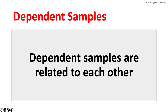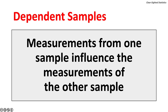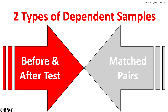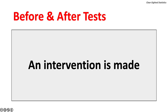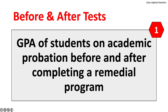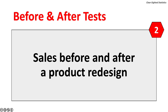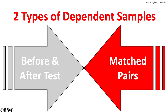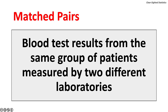Dependent samples are related to each other — measurements from one sample influence the other. There are two types: before-and-after tests, where measurements are made before and after an intervention (e.g., GPA of students on academic probation before and after a remedial program, or brand sales before and after a product redesign), and matched pairs, where no intervention is made (e.g., blood test results from the same patients measured by two different laboratories).